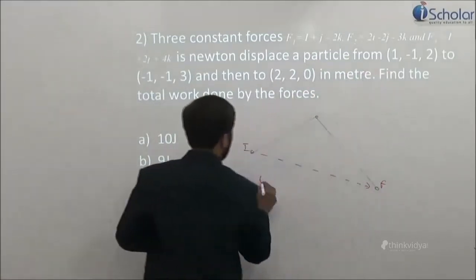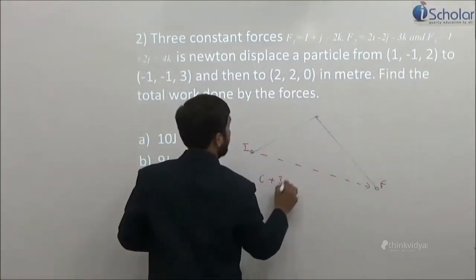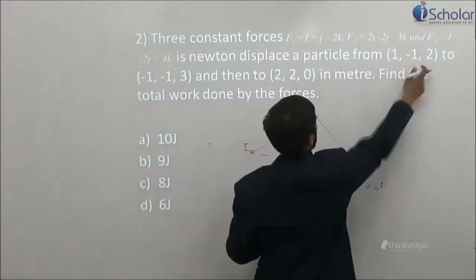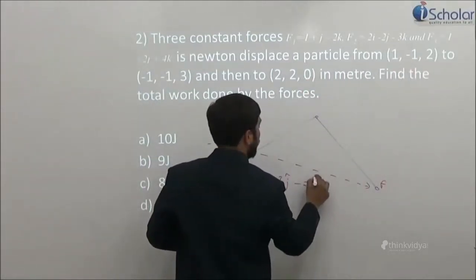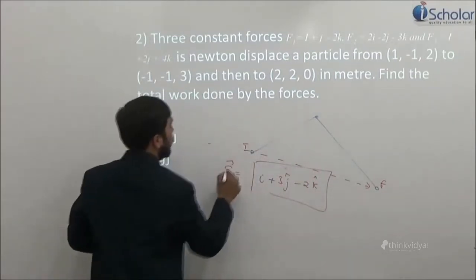So what is the displacement? 2 minus 1 i, 2 minus minus 1 plus 3 j, 0 minus 2 minus 2 k. You got that or not? This is your displacement.